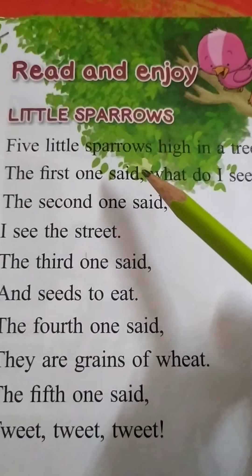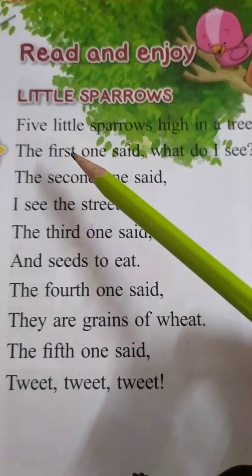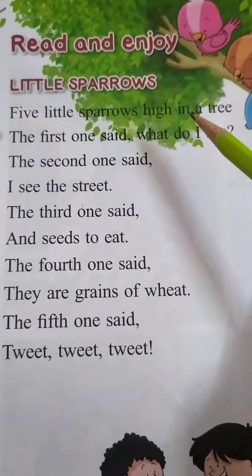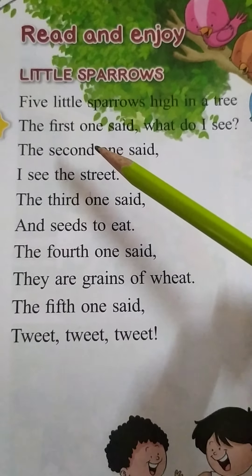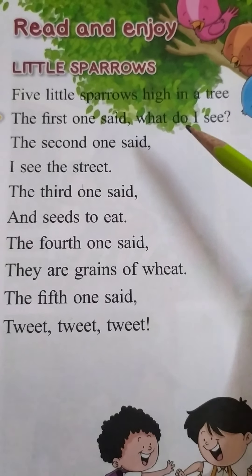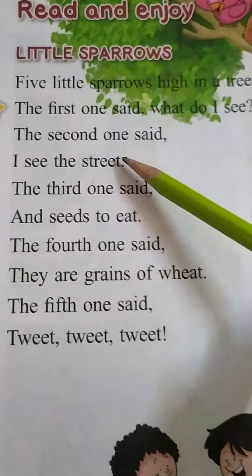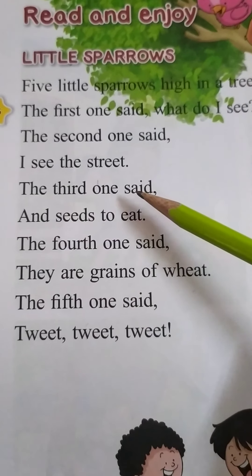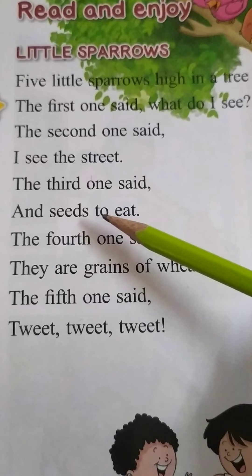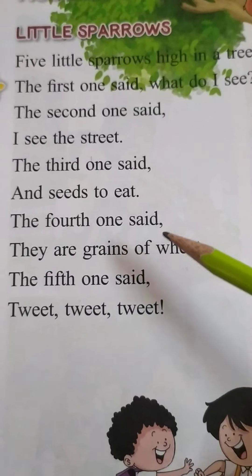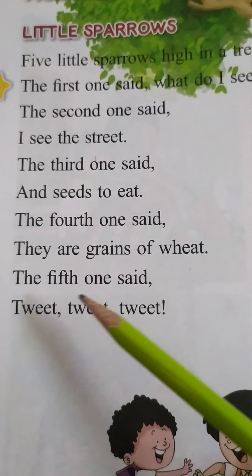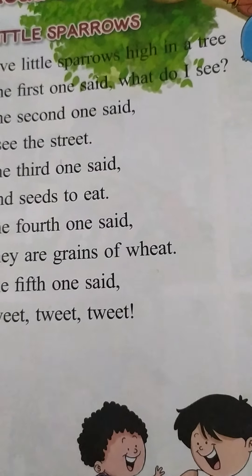So once again, repeat after me, children. I am going to recite this rhyme once again. Five little sparrows high in a tree. The first one said, what do I see? The second one said, I see the street. The third one said, and seeds to eat. The fourth one said, they are grains of wheat. The fifth one said, twit twit twit.